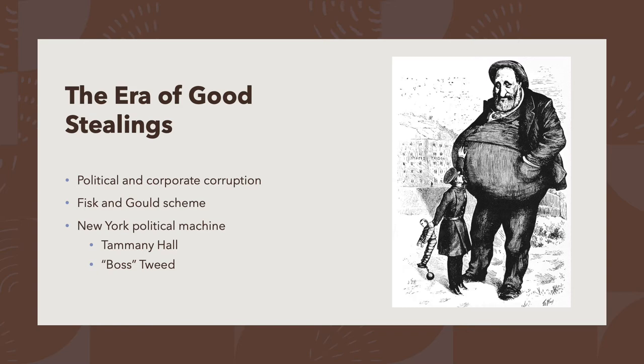The best example of this is Tammany Hall, the Democratic political machine in New York, run by a political boss — in this case, William 'Boss' Tweed. Tweed decided everything in New York, and at one point became so big and so powerful that, as this cartoon suggests, even the law could not touch him. The point being that when we talk about the corruption of the Grant years or other years, corruption really is the coin of the realm for the Gilded Age, be it at a state, local, or federal level.